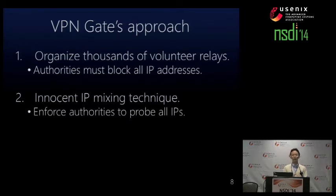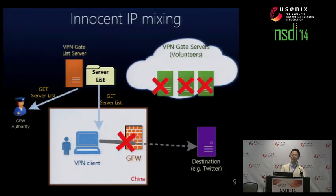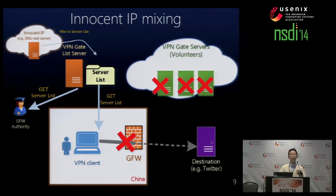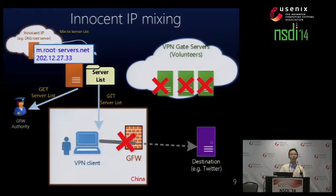The second technique is innocent IP mixing. This forces authorities to probe all IP addresses in advance before inserting them into the firewall. We can at any time very easily mix an innocent IP address into the server list. 'Innocent IP' means an IP address not related to VPN Gate. For example, we can mix a DNS root server's IP address into the server list very easily.